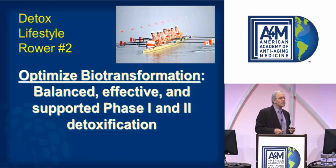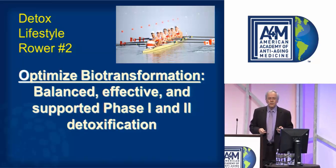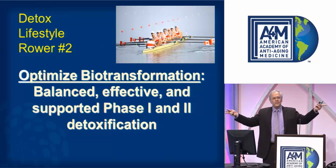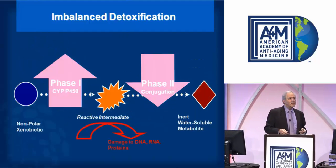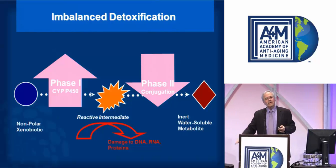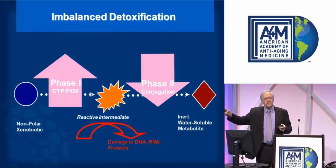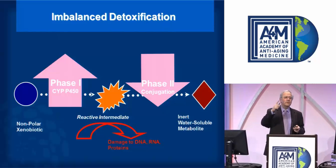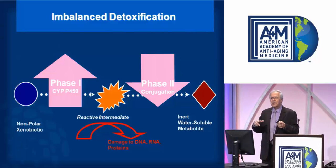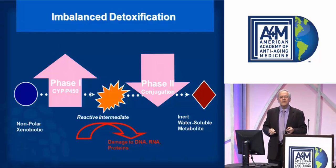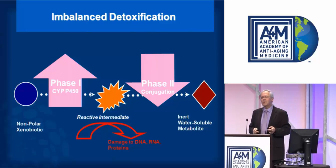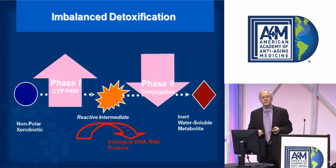Rower number two on the Detox Lifestyle Gold team: we want to optimize the biotransformation of toxicants, with balanced and effective phase one and phase two detox. The worst case scenario is up-regulated phase one and down-regulated phase two, where toxicants whistle through the phase one enzymatic pathways too quickly. These activated toxicants build up and overwhelm the phase two detox pathways.